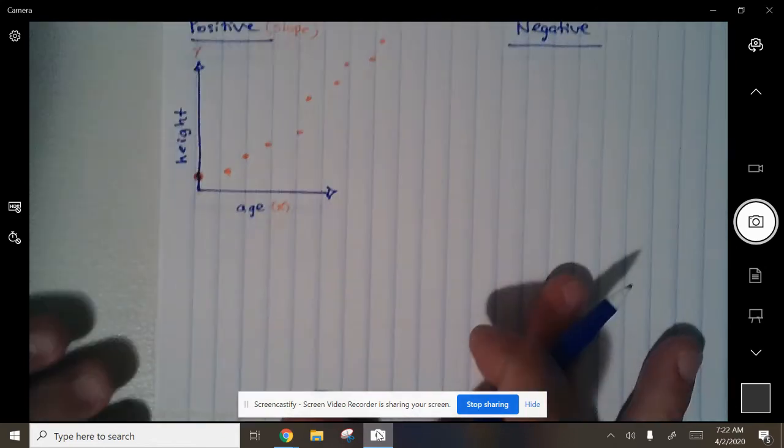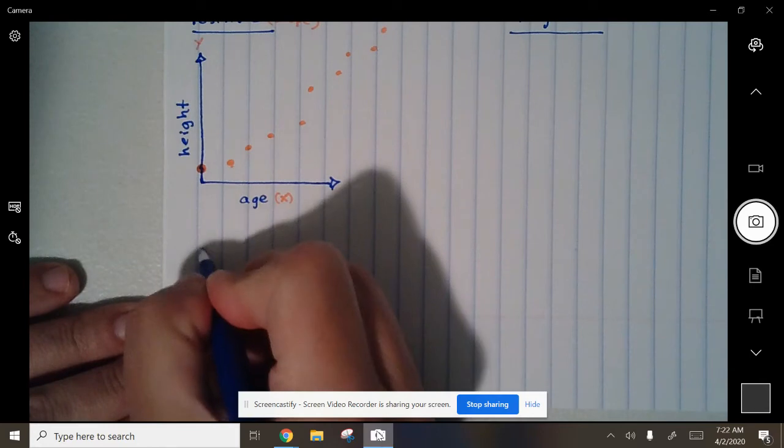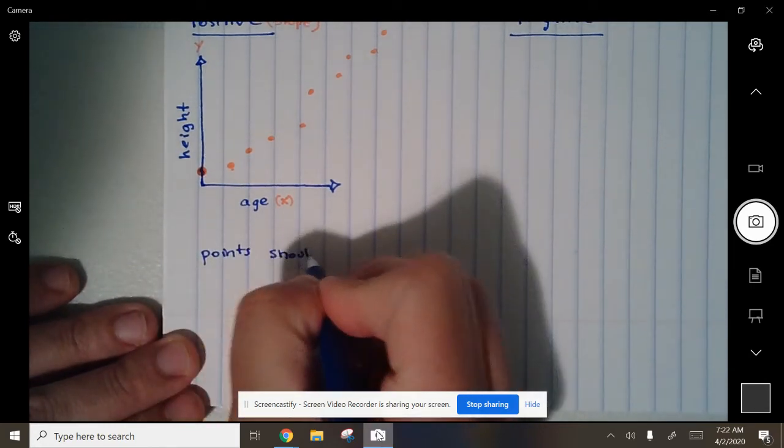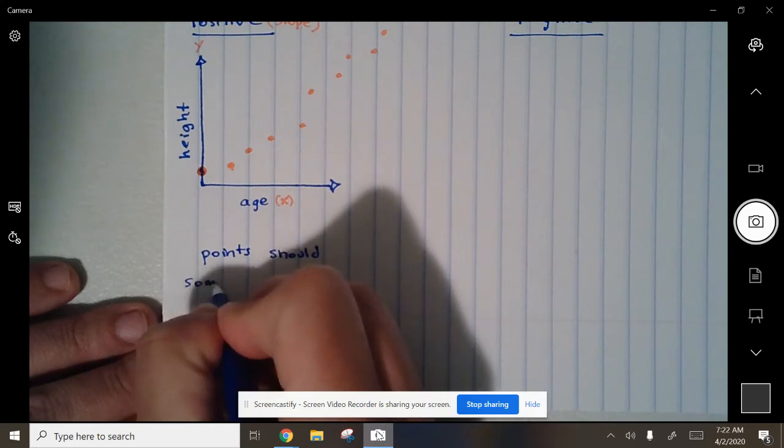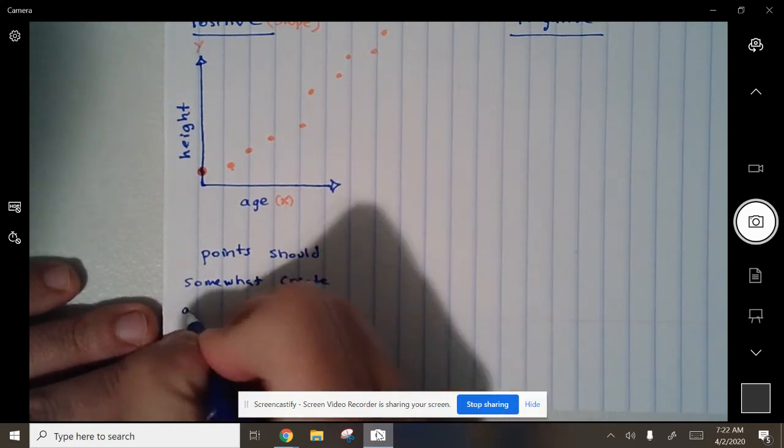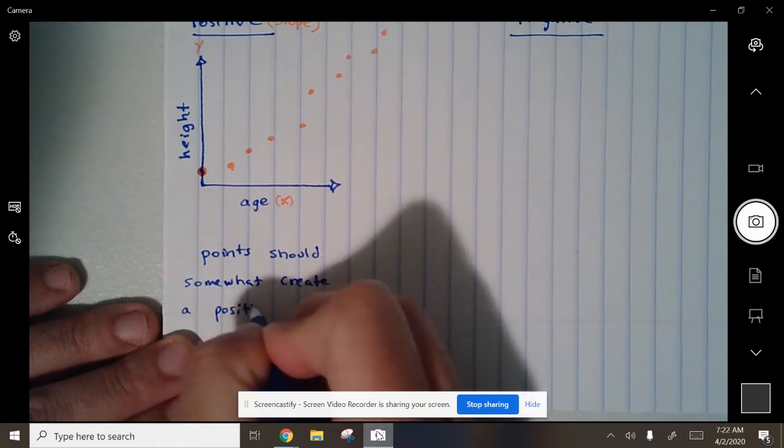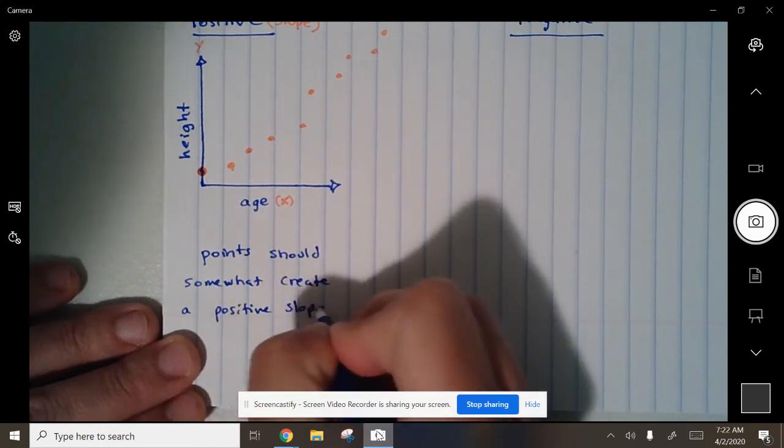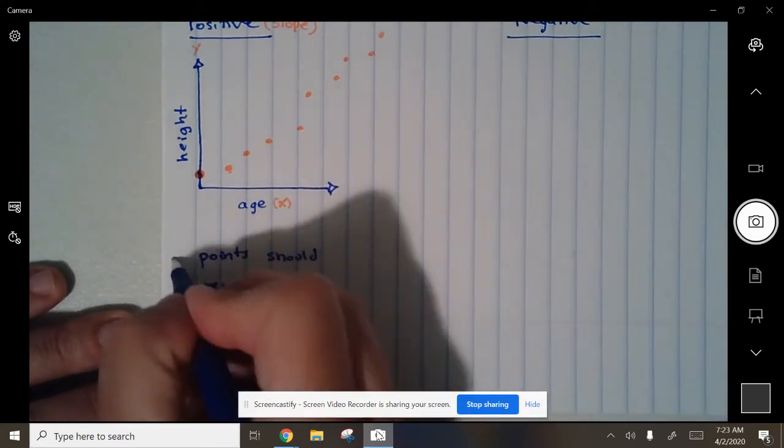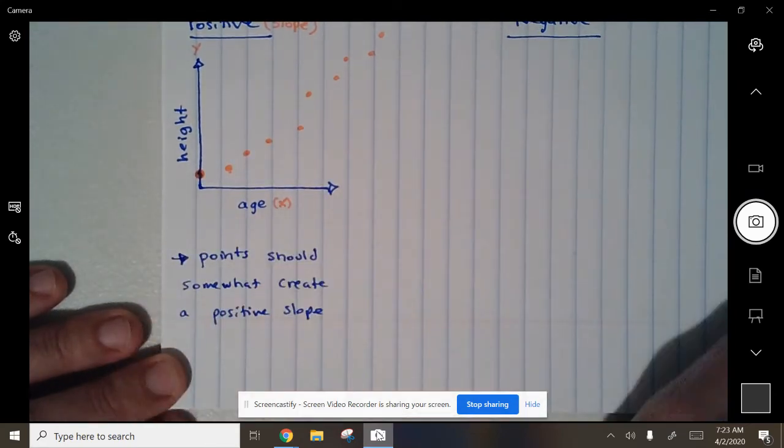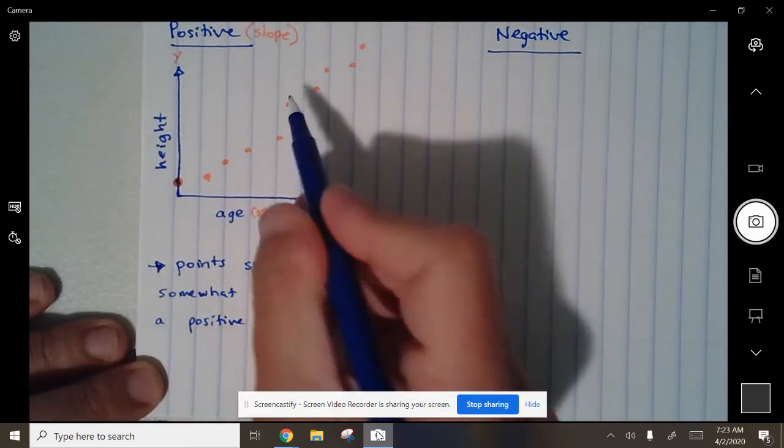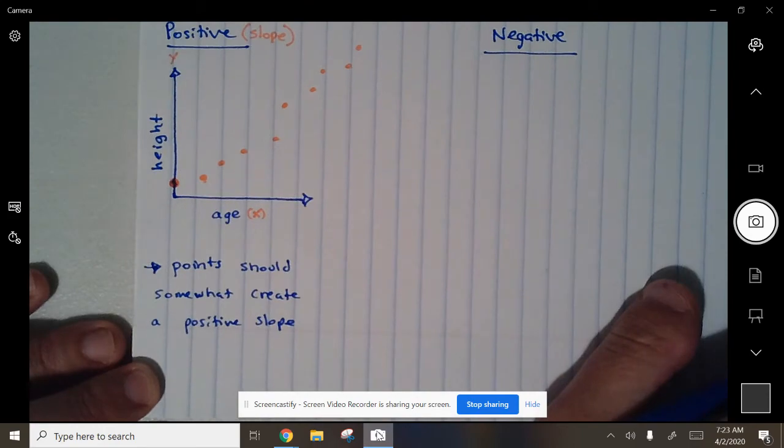So down here underneath, we're going to put points should somewhat create a positive slope. Points should somewhat create a positive slope. And that's how easy it is. And as age gets older, your height gets taller.